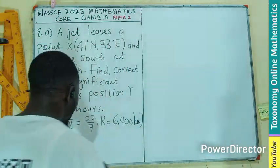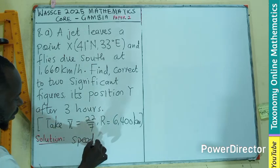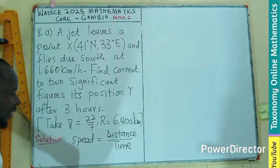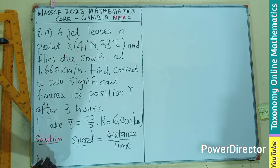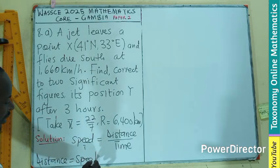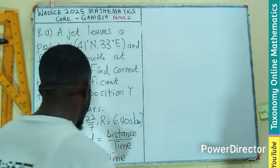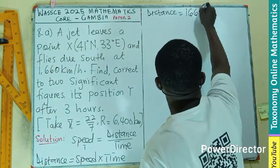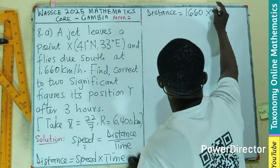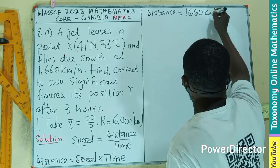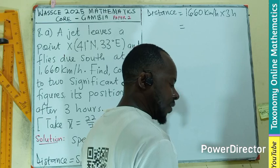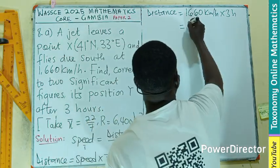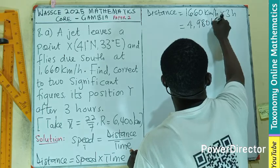So first thing first, if we recall, if you have speed it equals distance over time. That means the distance is just going to be speed times time. So in this case, the distance traveled is going to be the speed, which is 1,660 kilometers per hour, times three hours. So the hours will cancel and doing that multiplication we get 4,980 kilometers. So this is the distance traveled.